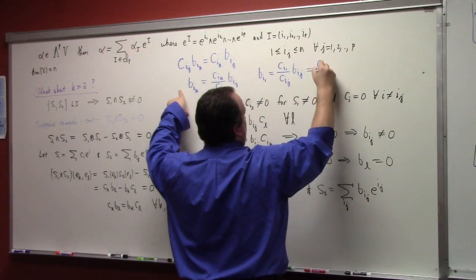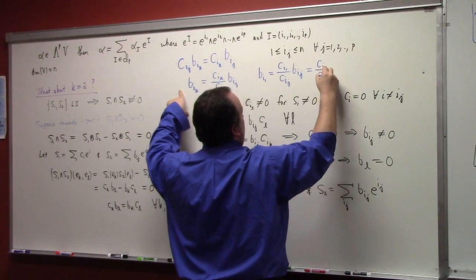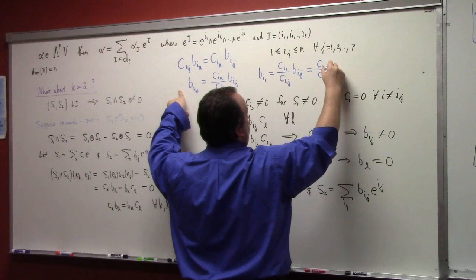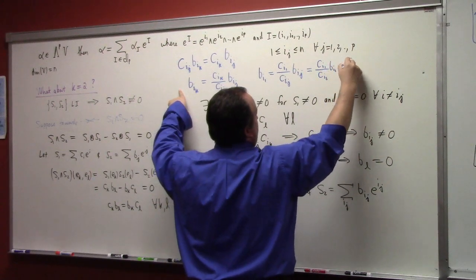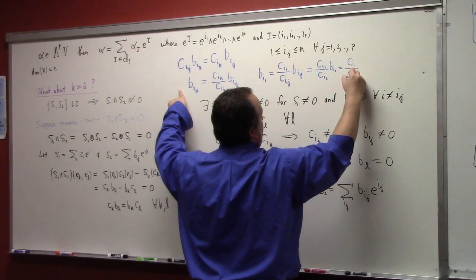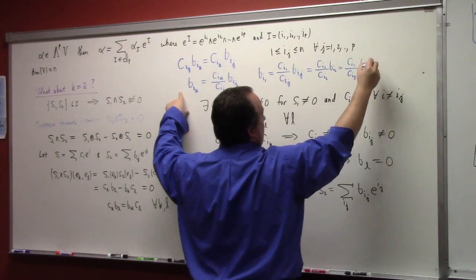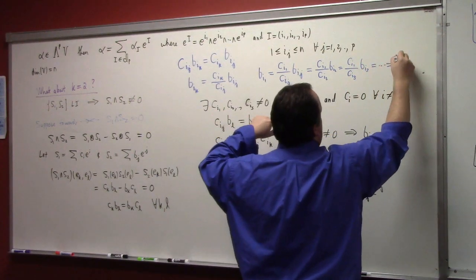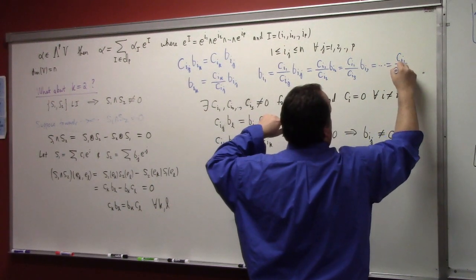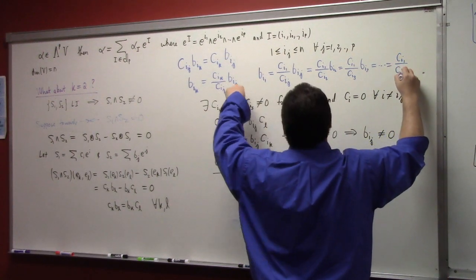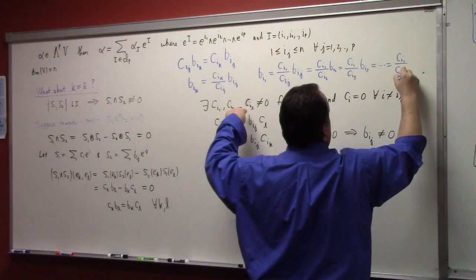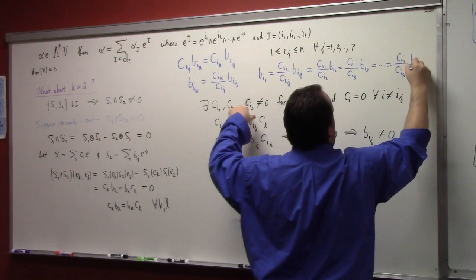So that's like C I 1 over C I 2, B I 2, C I 1 over C I 3, B I 3, right? Dot dot dot. C I 1 over C I, whatever my stupid notation was, I had S of them, right? B I S.